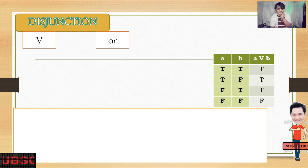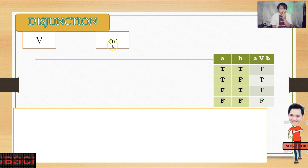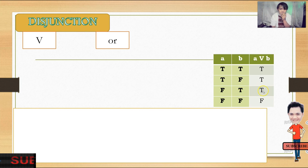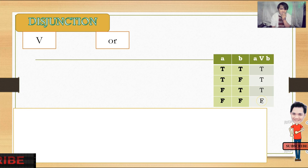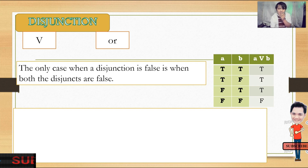Here is the truth table for disjunction. There are three true results and one false. If both statements are false, the result is false. With 'or,' you can choose either of the two. If true and true — whatever you choose, that is true. True and false — you choose the true statement, so that's true. False and true — again choose the true. False and false — there are no other choices, so it's still false. The only case when a disjunction is false is when both disjuncts are false.